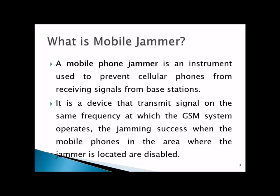What is a mobile jammer? A mobile jammer is an instrument which is used to prevent cellular phones from receiving signals from a base station. You have a device — a mobile, cell phone, or smartphone — and it gets a signal from a base station, those towers you may have seen. A mobile jammer prevents these cellular phones from getting signals. It is a device that transmits signals on the same frequency at which the GSM system operates, so the jamming succeeds when the mobile phones in the area where the jammer is located are disabled.